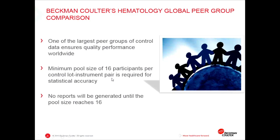Let's talk about the global peer group comparison. It's one of the largest groups of control data worldwide, with many thousands of instruments in the pool. There's a minimum pool size of 16 participants per control lot instrument pair for statistical accuracy. So if you have a control material with a lot number and you're running it on our DXH 800, you'd need at least 16 participants running the same lot number on a DXH before you get a peer group comparison. No report will be generated until we have statistically significant results — this ensures you don't get a spurious result that could cause unnecessary panic.